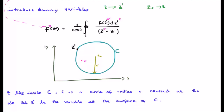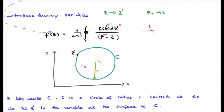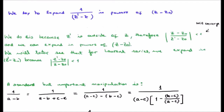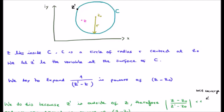Remember the Cauchy integral formula is only valid in the limit. The denominator is 1 over z prime minus z — this is important. We try to expand 1 over (z prime minus z) in powers of (z minus z_0), not z prime. We do this because z prime is outside of z, therefore the magnitude of (z minus z_0) divided by (z prime minus z_0) will be less than 1 and such a power series will converge.